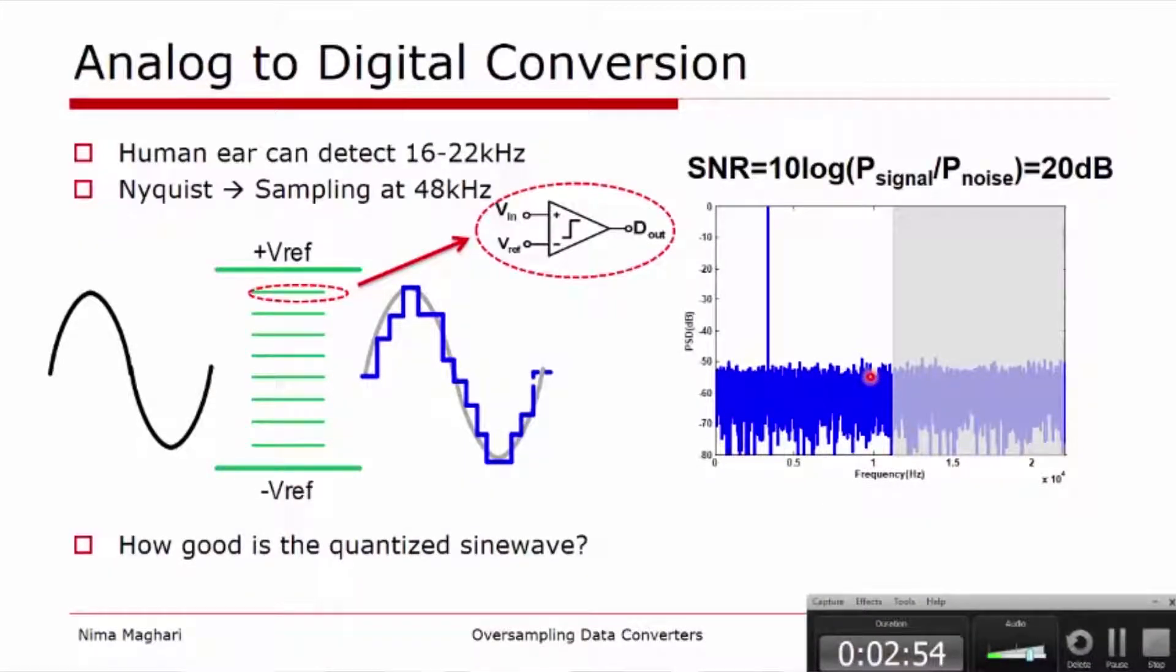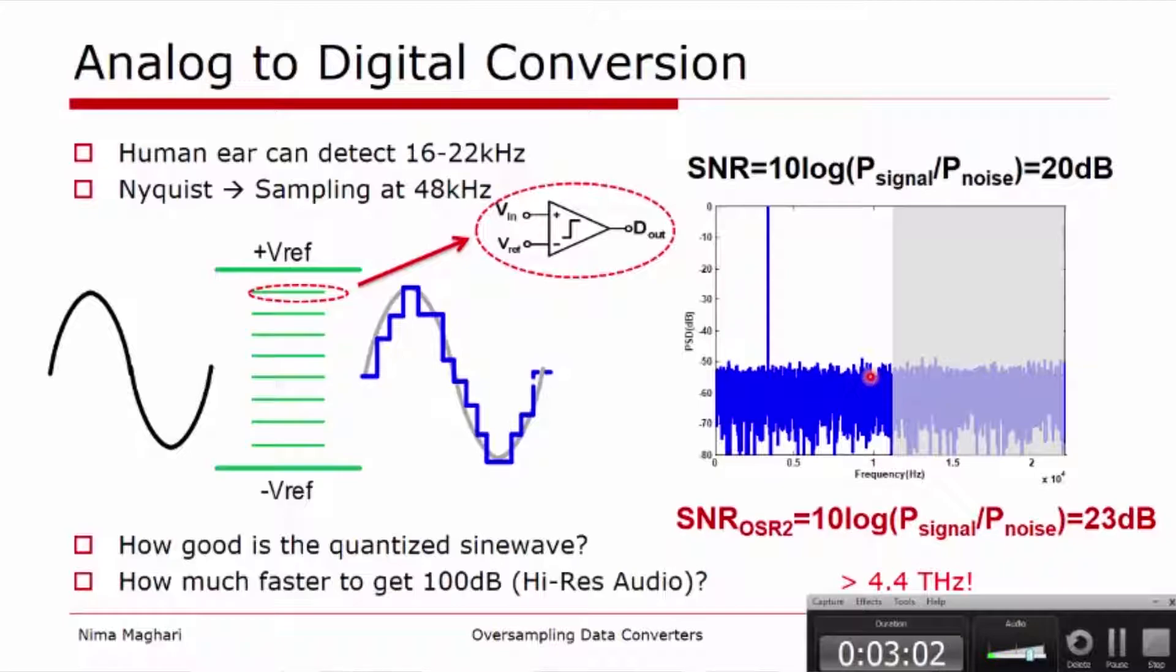Now if I want to see for instance how much I need to get to 100 dB resolution, how much oversampling I need. The answer is I would need a sampling rate of greater than 4.4 Terahertz, which shows that is not practical and it's extremely inefficient way to achieve such a resolution using only oversampling.